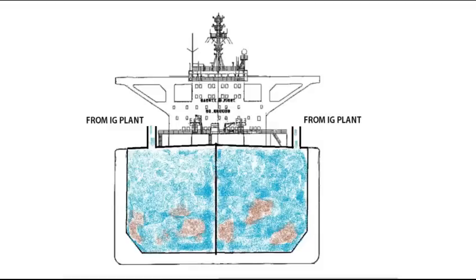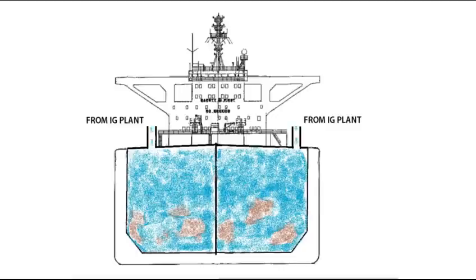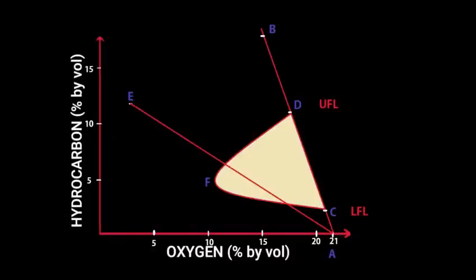To tackle this, we need to purge the tank with inert gas. By doing this, we reduce the oxygen content as well as the hydrocarbon content. After purging, we reach a point where the oxygen content is about 3% and the hydrocarbon content is about 5% by volume. Let us name this point as M.